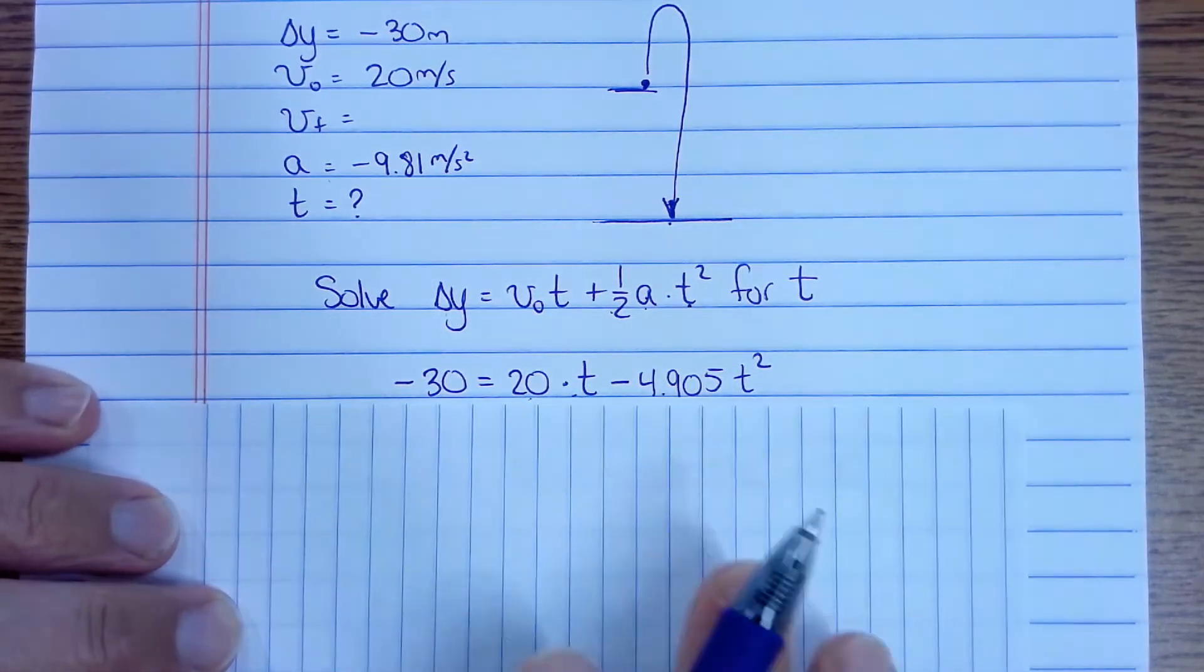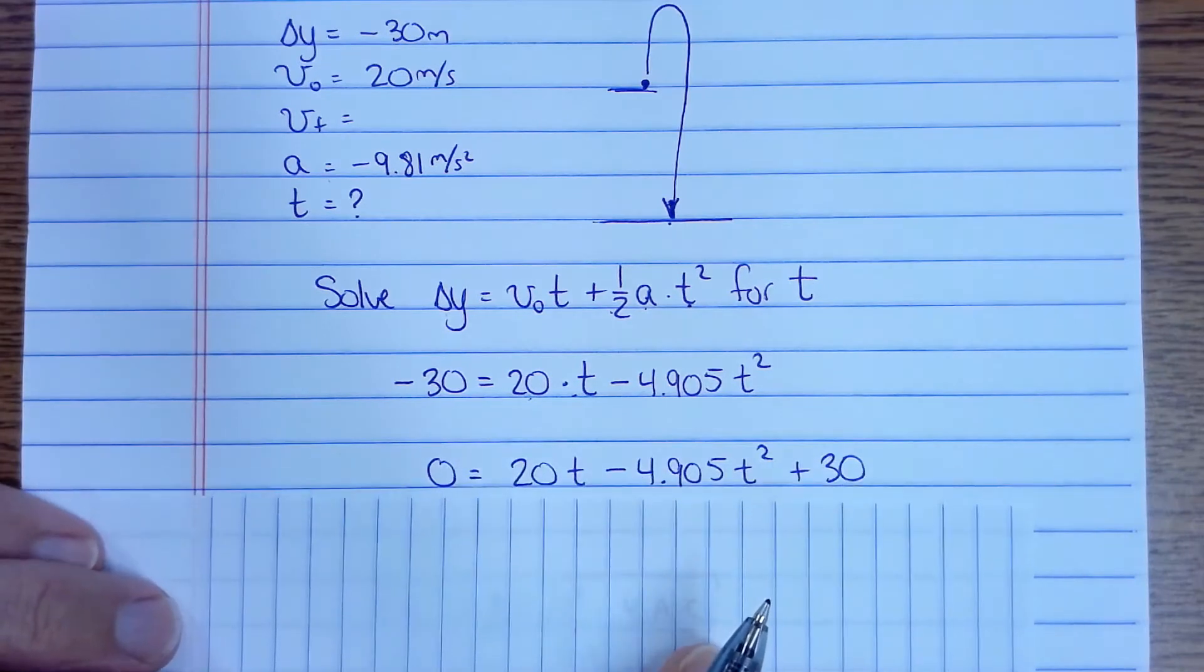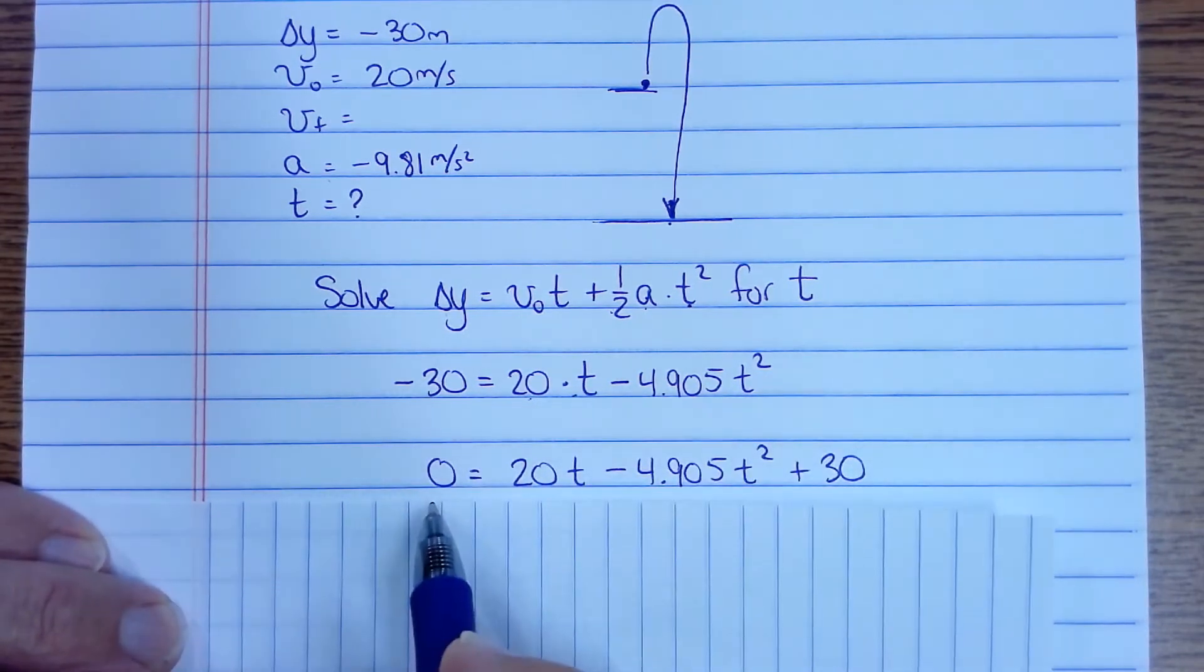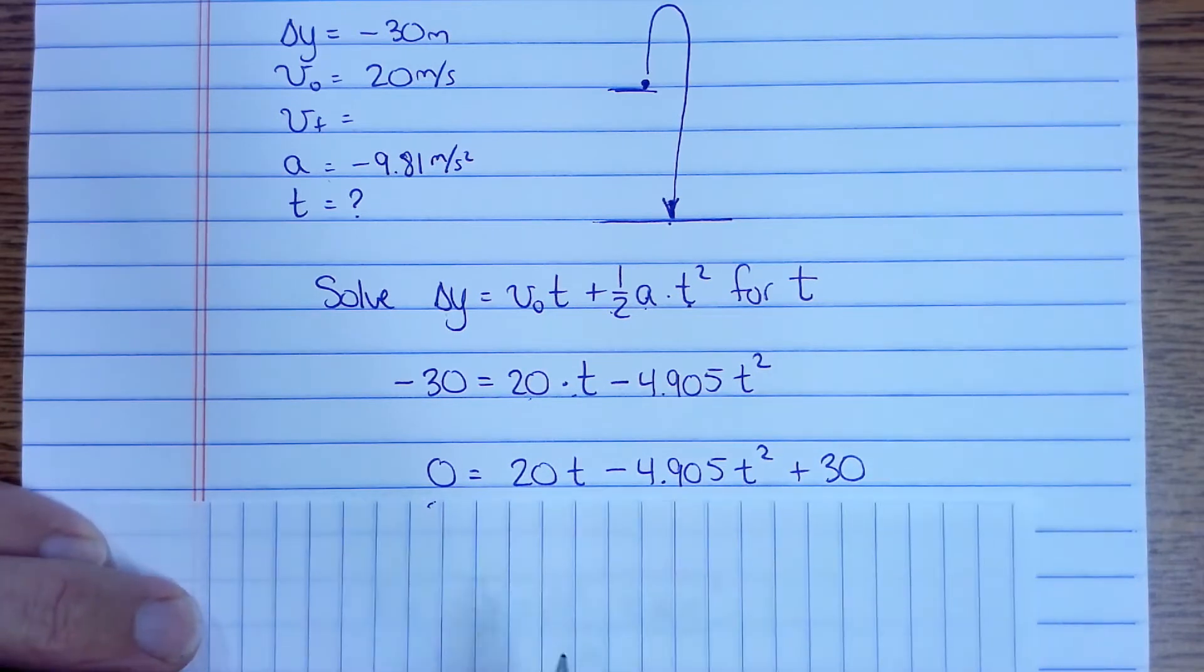To solve the quadratic formula we have to get it in standard form. So I've got to get the 30 to the other side so it equals 0. So now I have it in standard form.